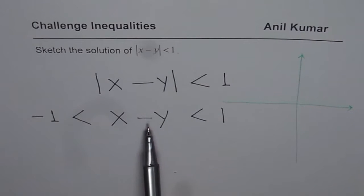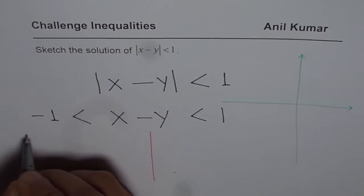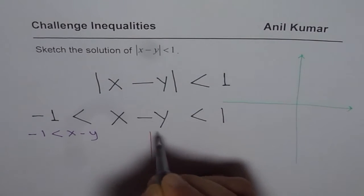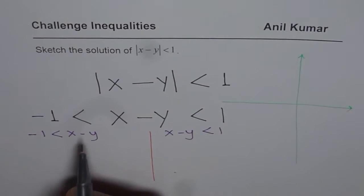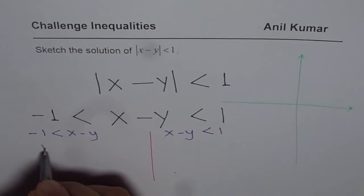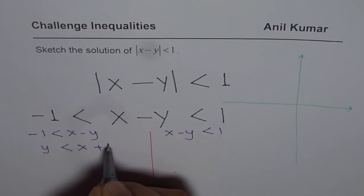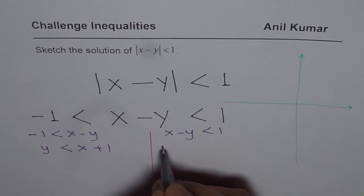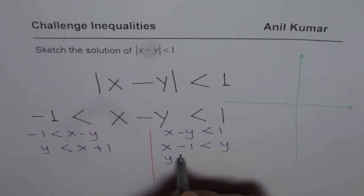Now, this equation double inequality can be seen in two parts. So, let me do them separately. So, one is minus 1 less than x minus y. The other one is x minus y is less than 1. So, let us rearrange, bringing y to this side. So, we get y is less than, bringing 1 to the other side, x plus 1, correct? And this equation will bring y to the right side. So, we have x minus 1 is less than y or y is greater than x minus 1.